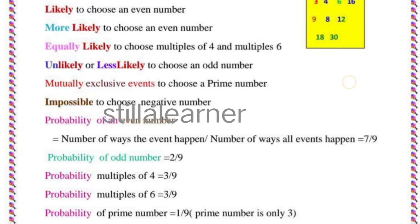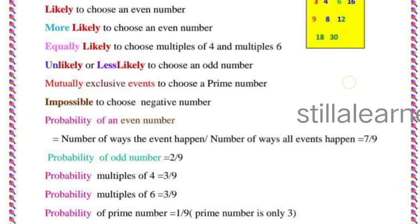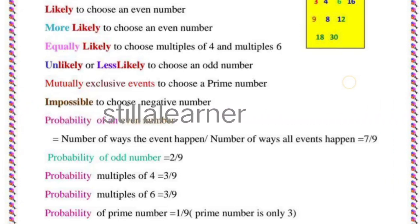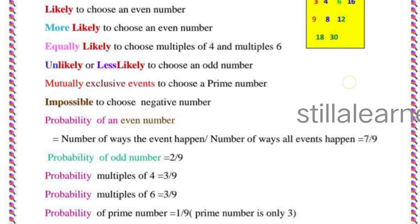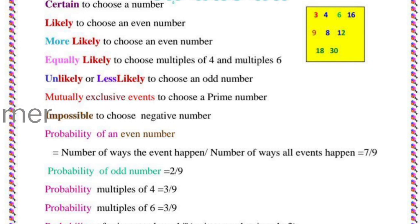In that, probability of even number equals number of ways that event happens divided by number of ways all events happen. That equals 7/9. Look at the numbers in the blue sheet here: 3, 4, 6, 16, 9, 8, 12, 18, 30.